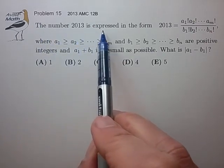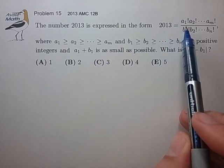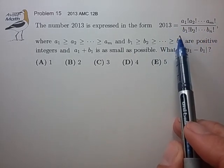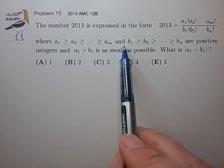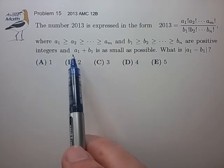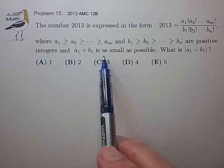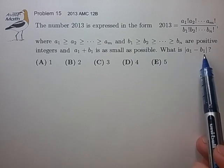The number 2013 is expressed in the form 2013 equals the ratio of factorial expressions where the decreasing sequence of A and decreasing sequence of B are positive integers with the sum A1 plus B1 as small as possible. What is the absolute difference of A1 minus B1?